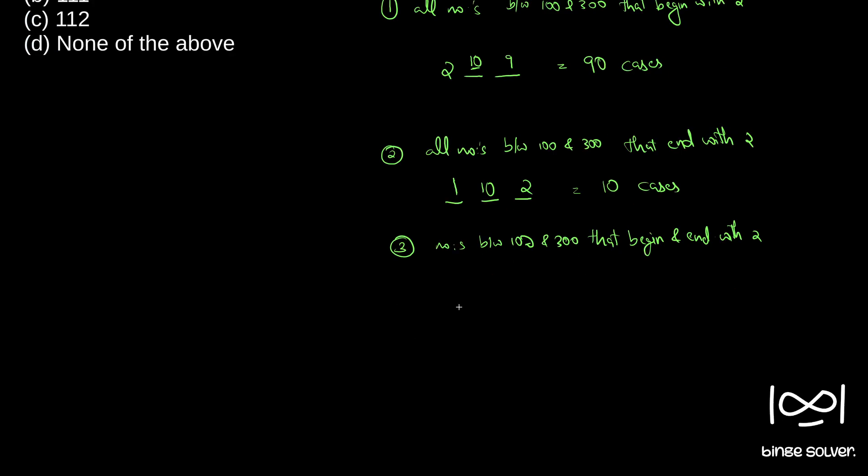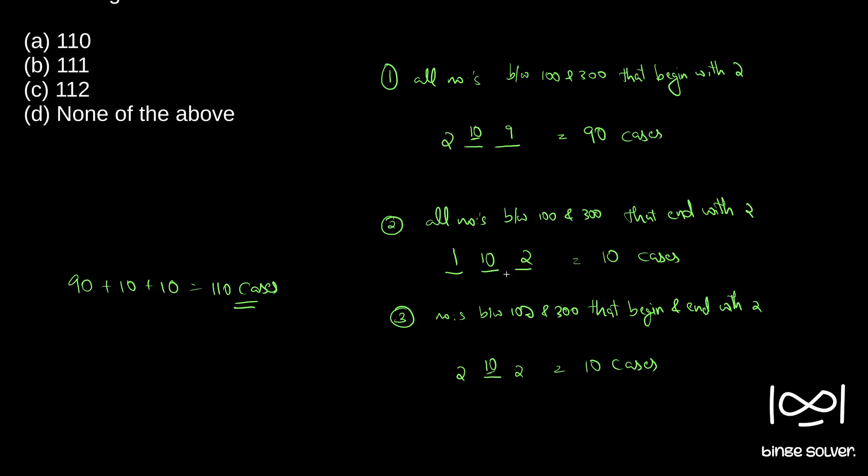So 2 here, 2 here. So here also we have 10 cases. All 10 digits, 0 to 9, can come here, so 10 cases. So totally 90 plus 10 plus 10 equals 110 cases. So totally 110 cases. As you can see, in all these three cases,